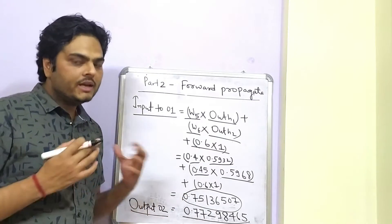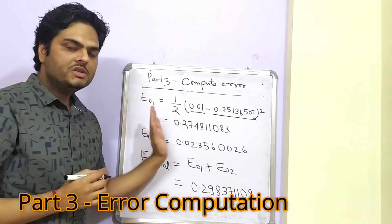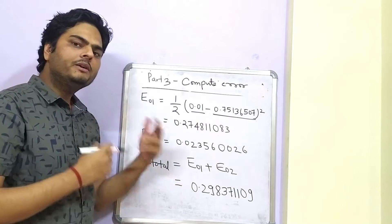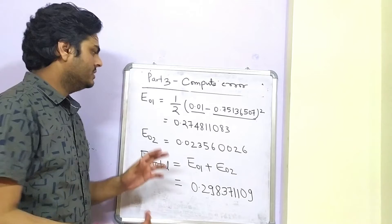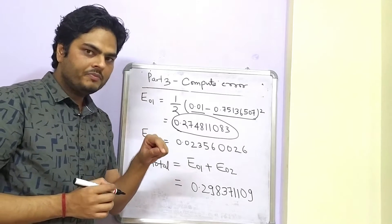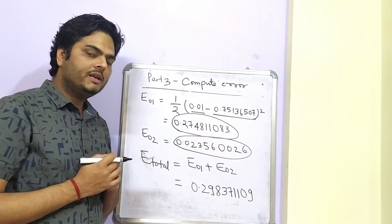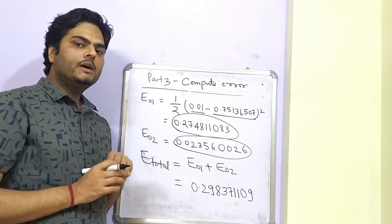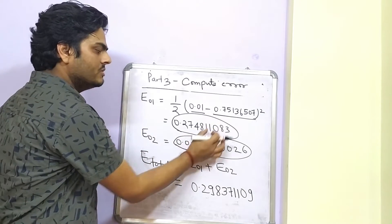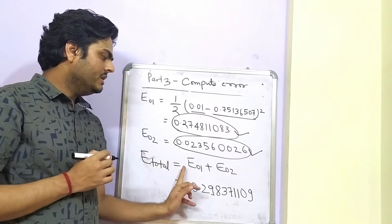Now it is time to compute the error. We have actual values and predicted values. The error is computed as: ½ × (actual − predicted)². This gives a relative error for each output. The error from output node 1 gives E_O1, and from output node 2 gives E_O2. The total error E_total = E_O1 + E_O2, which is the total error of the neural network in the first iteration.